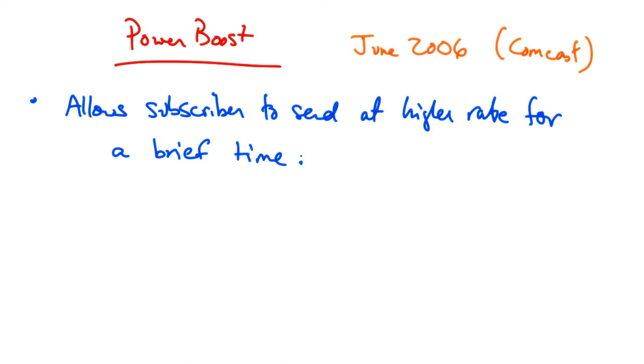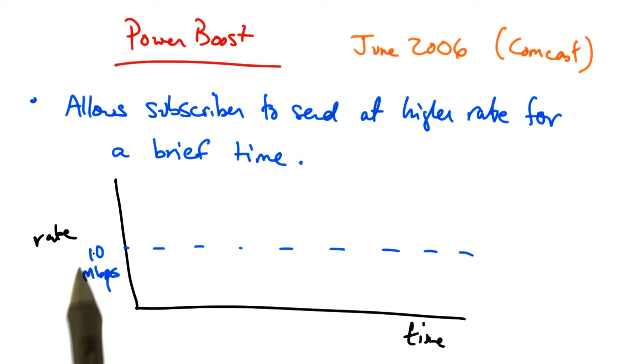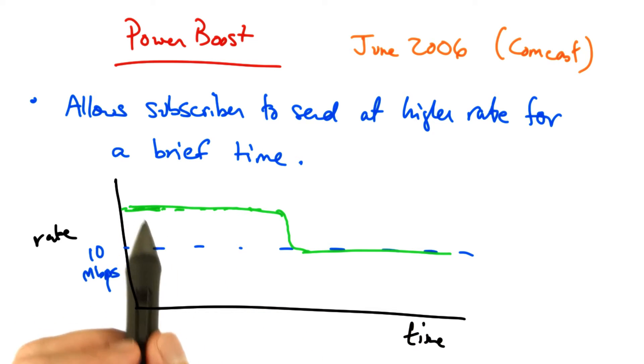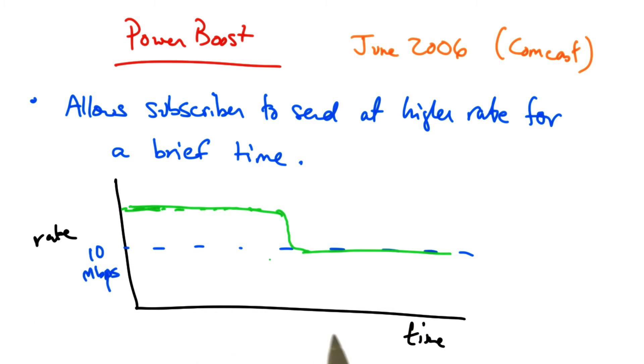PowerBoost allows a subscriber to send at a higher rate for a brief period of time. So if you subscribe at a rate of 10 megabits per second, then PowerBoost might allow you to send at a higher rate for some period of time before being shaped back to the rate at which you were subscribed at.